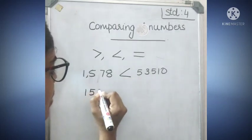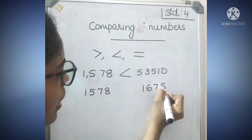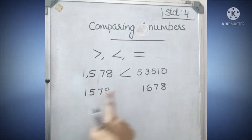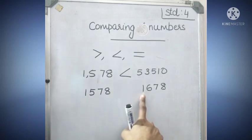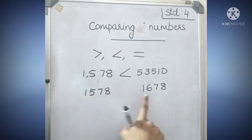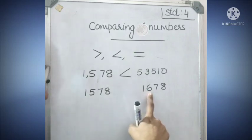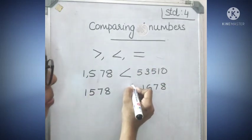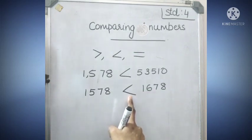Here a five-digit number, here a five-digit number. Both have four digits. Then compare the numbers digit by digit. Here one, here one — no change. Here five, here six. Six hundred versus five hundred. So we know five is less than six. Which symbol comes? The less than symbol. This is less than this.